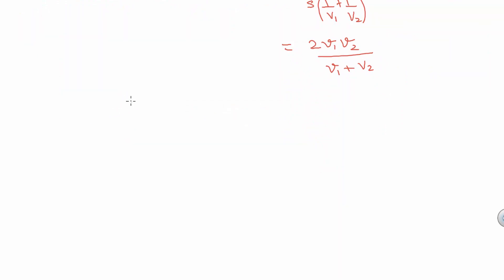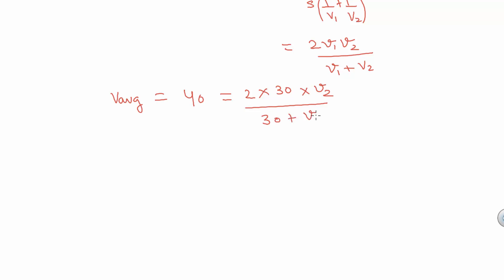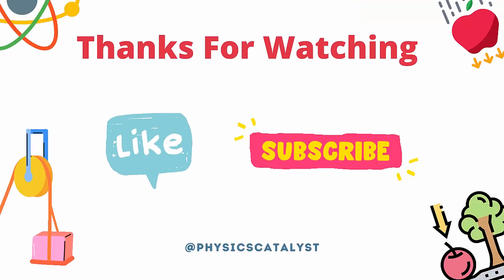Now putting in the values, we get V_average equals 40 km per hour. So 40 equals 2 times 30 times V2 upon 30 plus V2. This gives 30 plus V2 equals (3/2)·V2. On solving this relation, we get V2 equals 60 km per hour.